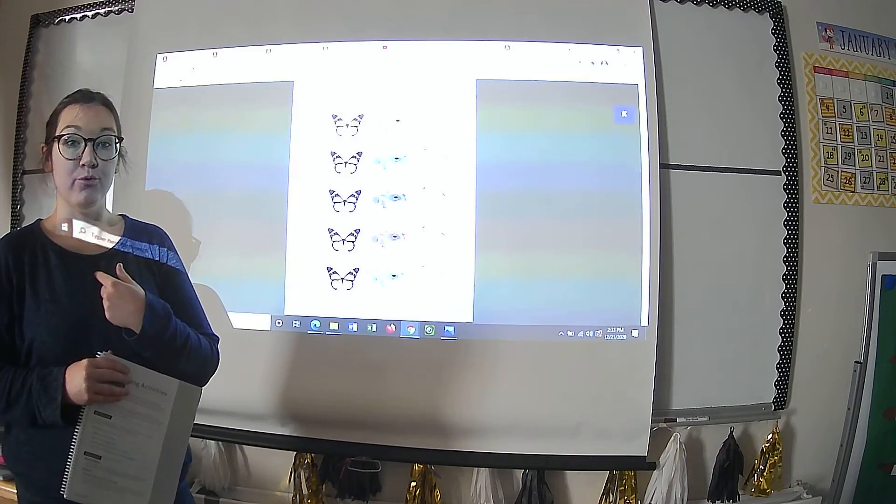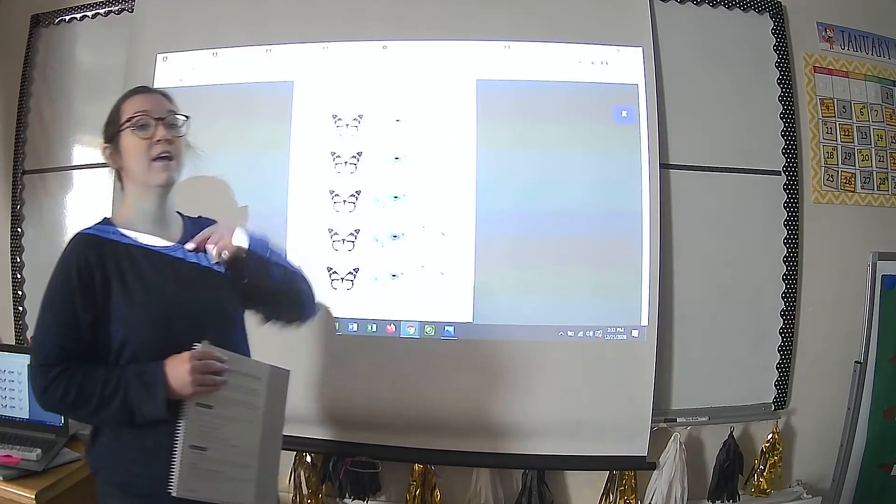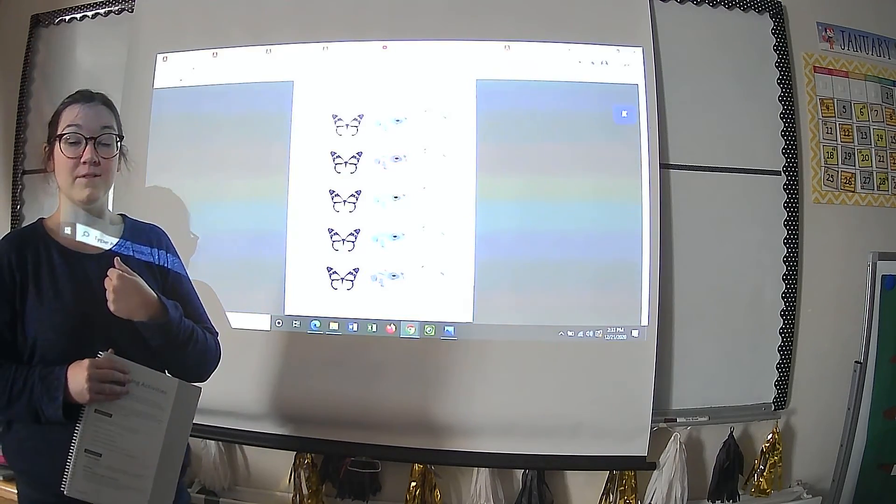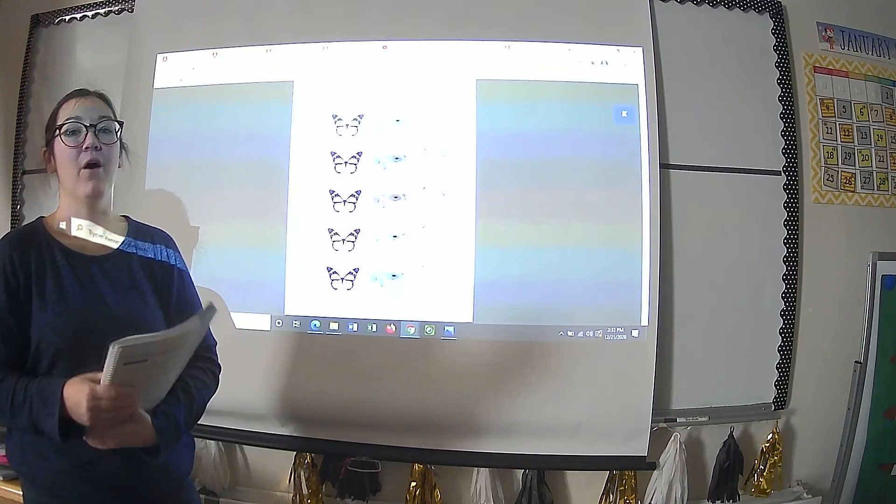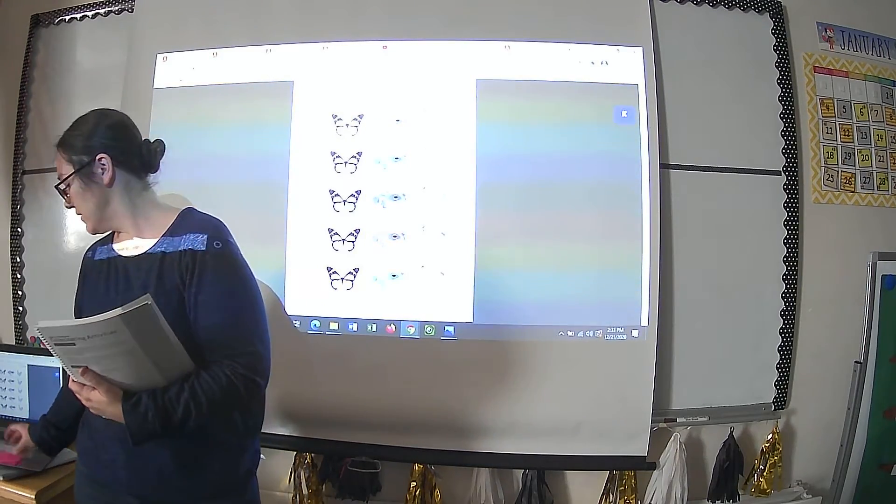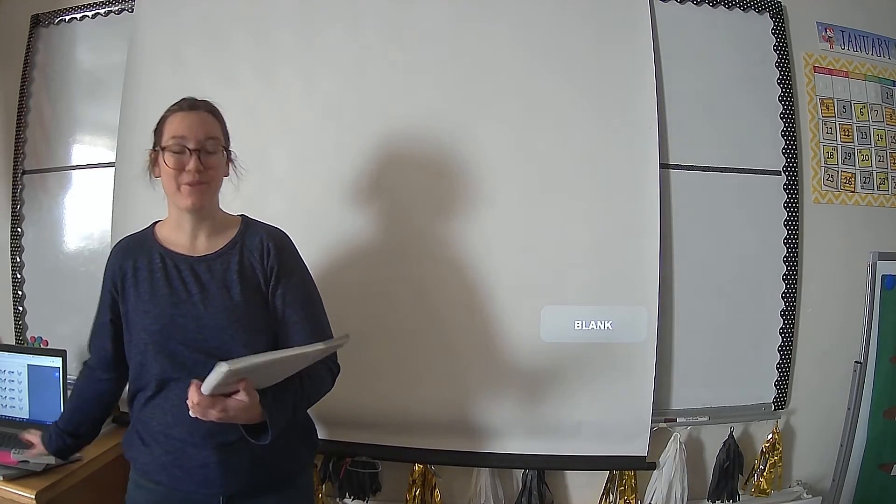If I say something that is true about the life cycle of a chicken, you'll circle the chicken. And if what I say is about the life cycle of a frog, you'll circle the frog. Alright, I'm going to turn that off again so I don't go blind.